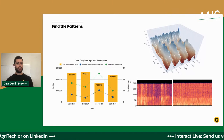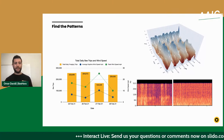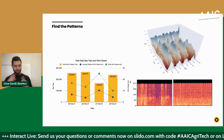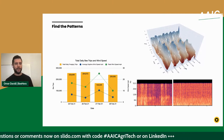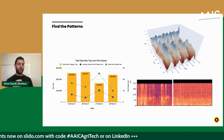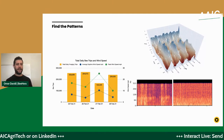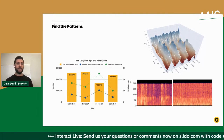Bee colonies don't collapse because of a vague phenomenon — they collapse because of a specific reason. The fact that we see more hives collapsing makes it look like a phenomenon, but if the queen is not performing well, we can replace the queen. If the hive is starving, we can feed the colonies. If there are problems with mites, we can treat them. There are things we can do as long as we detect it early enough.